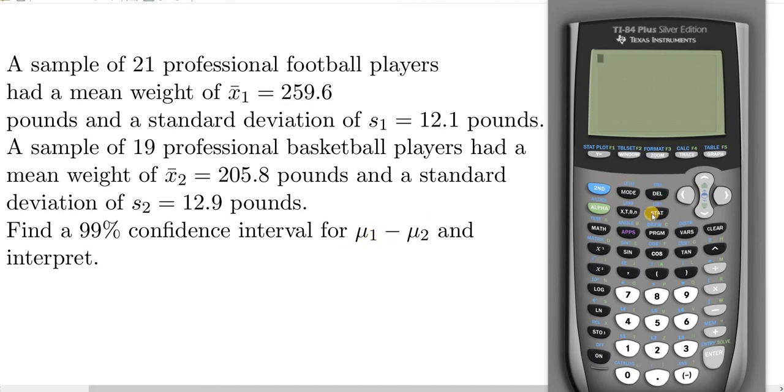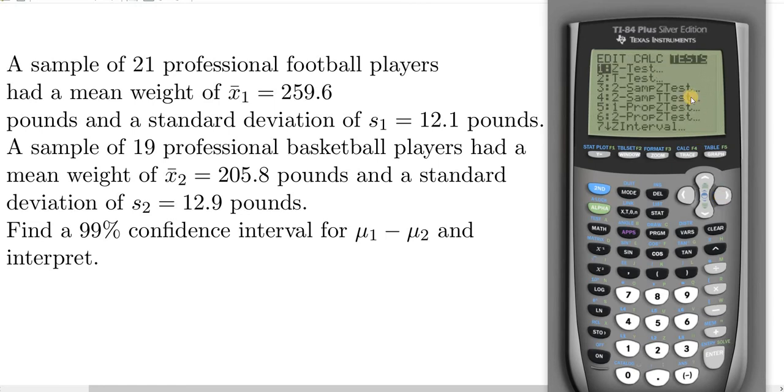To do this, we're going to go to where it says STAT right here in the calculator. You want to press your STAT button, then go over to where it says TESTS using the right arrow key. Then you want to look for something that says T interval, but we have two samples, so we need to look for something that says two samples. There's T interval, but that's one sample. There it is, two-sample T interval.